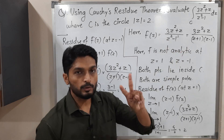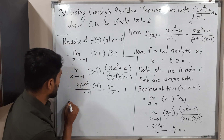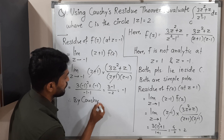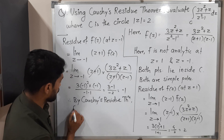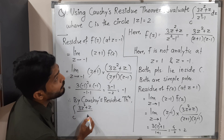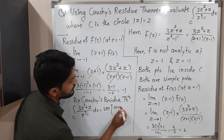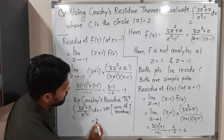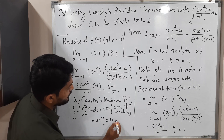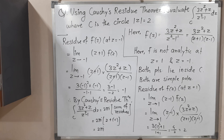We have two poles and both lie inside C, and we found the residues at both poles. Therefore by Cauchy's residue theorem, the integral over C of (3z² + z)/(z² - 1) dz equals 2πi times the sum of residues. The sum is 2 + (-1) = 1, so the final answer is 2πi. This is the value of the given integral. Thank you, see you in the next video.